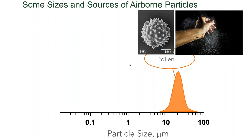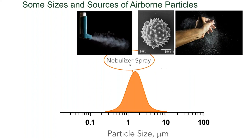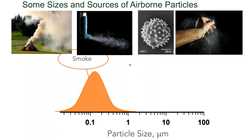Pollen, which makes you sneeze and gives you an itchy throat, is in the 10-micron size range. If you suffer from asthma, a medical nebulizer makes particles from about half a micron up to five or six microns in size. At the bottom of this scale we see smoke — from wildfires, cigarettes, or a fireplace — some of the smallest particles we find, around 0.1 microns in size.